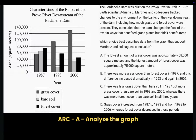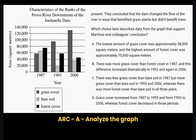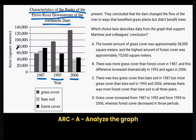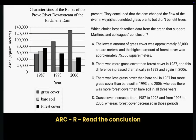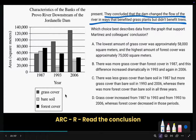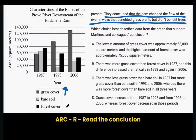Let's look at this bar graph question next. I see a bar graph labeled 'Characteristics of the Banks of the Paruva River downstream of the Jordanel Dam.' We've got three years: 1987, 1993, and 2006. Each year has bars for grass cover, bare soil, and forest cover. The left axis shows the area each covers. Scientists conclude that the dam changed the river in ways that benefited grass plants but didn't benefit trees — so we need evidence that grass area increased while tree area decreased.